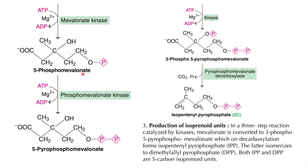Another phosphorylation then occurs using the enzyme phosphomevalonate kinase, consuming another ATP to add another phosphate group, giving 5-pyrophosphomevalonate. The remaining free hydroxyl group is also phosphorylated by a kinase enzyme, producing 3-phospho-5-pyrophosphomevalonate.